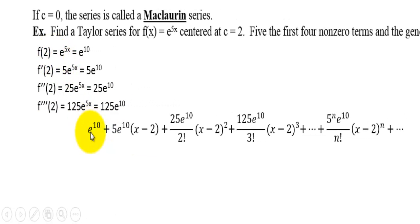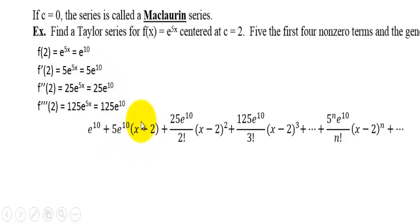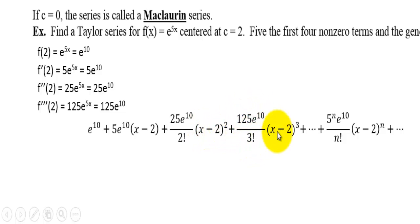First we have f of 2, and that's really over 0 factorial, plus 5e to the 10th — that's the first derivative — over 1 factorial, times x minus 2 to the 1st, plus the second derivative over 2 factorial times x minus 2 squared, then the third derivative over 3 factorial times x minus 2 to the 3rd, plus — keep on going in that fashion.